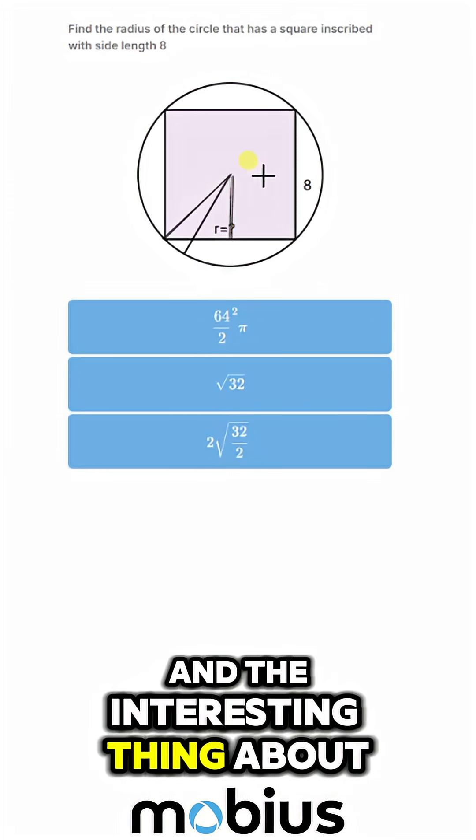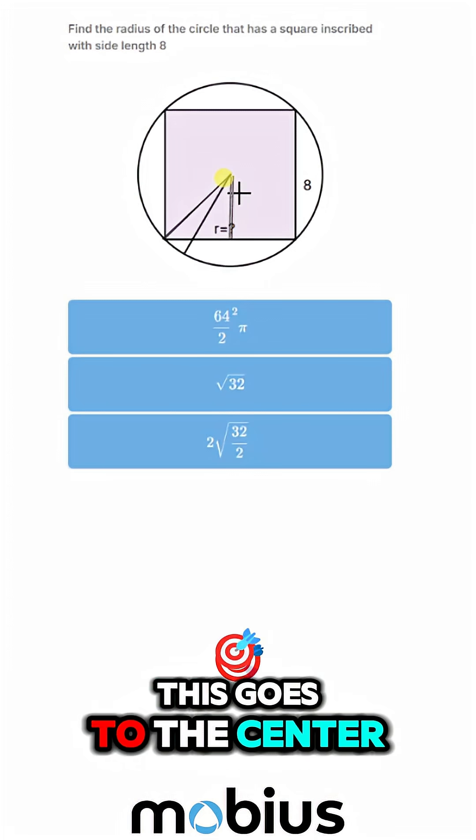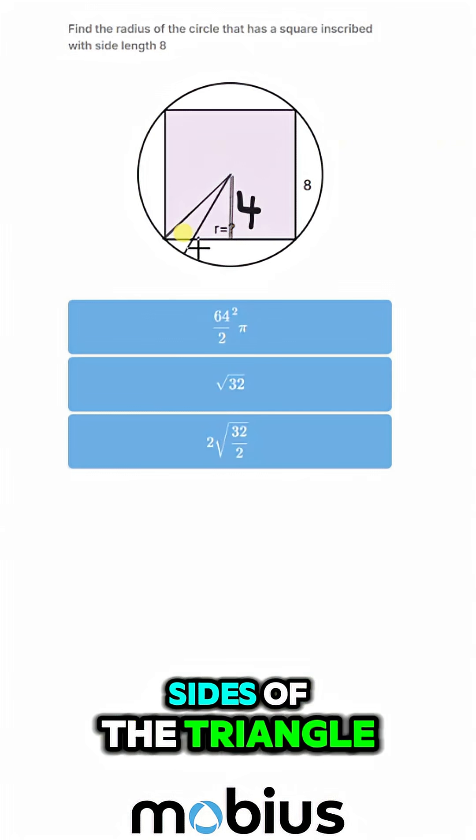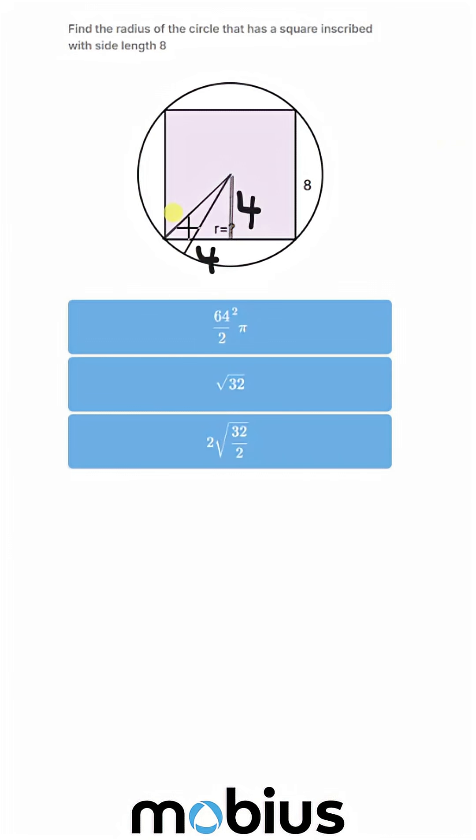The interesting thing about this is it goes to the center, so each of the sides of the triangle is half the sides of the square.